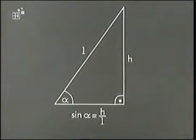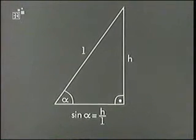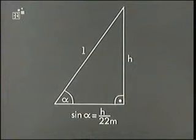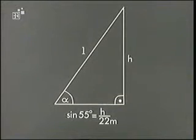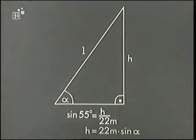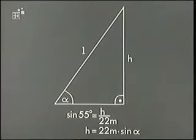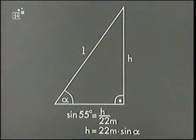Mit Hilfe dieser Beziehung können wir die gesuchte Höhe ausrechnen. Die Gesamtlänge der Leiter war 22 Meter, der Anstiegswinkel betrug 55 Grad. Dann gilt: Sinus von 55 Grad gleich H durch 22 Meter. Diese Gleichung muss nur noch nach H aufgelöst werden, also H gleich 22 Meter mal Sinus von 55 Grad. Damit ist die Aufgabe gelöst. Die gesuchte Höhe beträgt ca. 18 Meter.